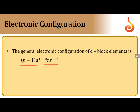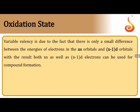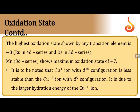The general electronic configuration is (n-1)d^(1-10) ns^(1-2). In some exceptional cases ns can come to 0, like palladium showing pseudo noble gas configuration in the ground state. Regarding oxidation states, ns orbitals and (n-1)d orbitals have very small energy differences. This small difference allows electrons from both orbitals to participate in bond formation, which is why transition elements exhibit variable oxidation states.